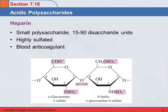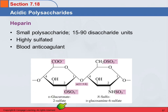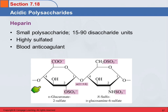Heparin is a substance you've probably heard of. This is also an acidic polysaccharide — a small one, with 15 to 90 disaccharide units. It's highly sulfated: we've got glucuronate-2-sulfate and sulfoglucosamine-6-sulfate. This component has a sulfate here and a sulfate here, and this one has one sulfate. So there's a lot of sulfur involved in heparin, and it's a blood anticoagulant — it keeps your blood from clotting.